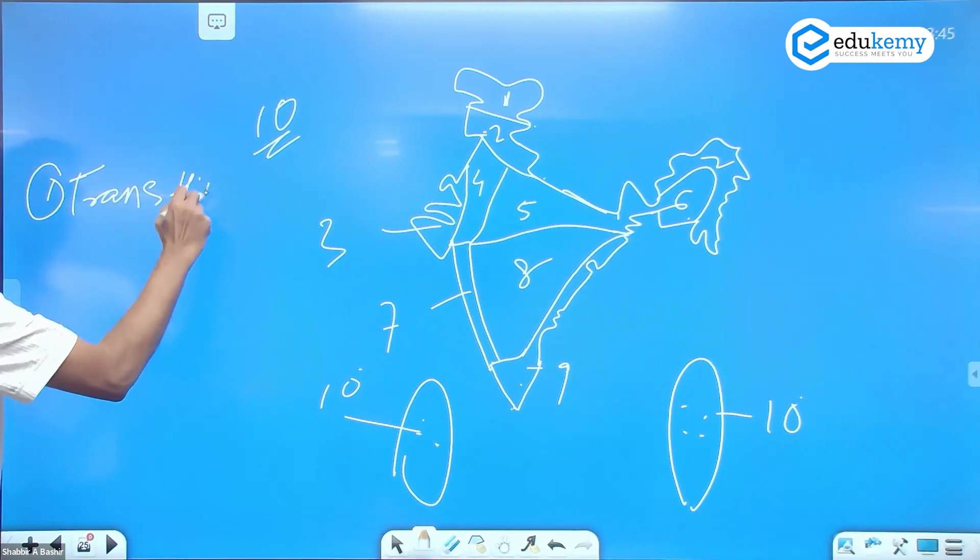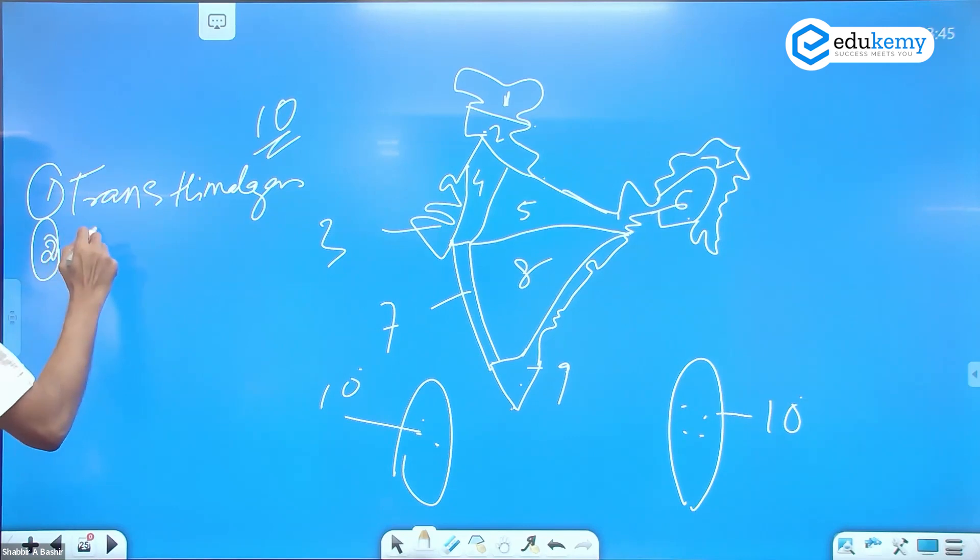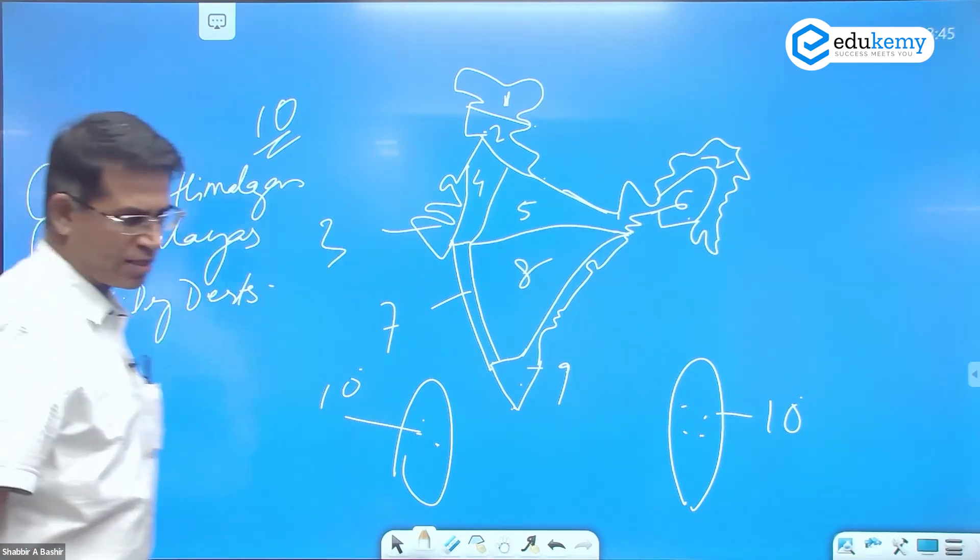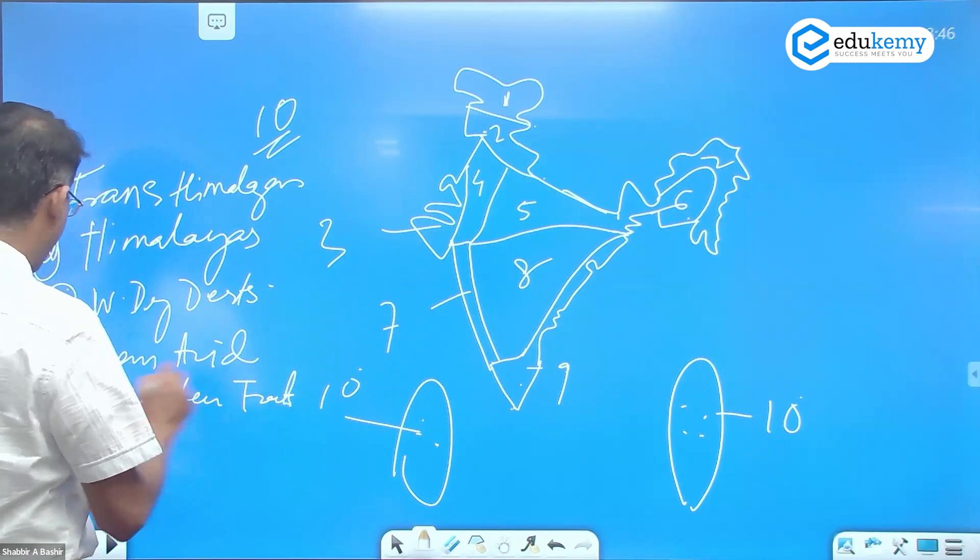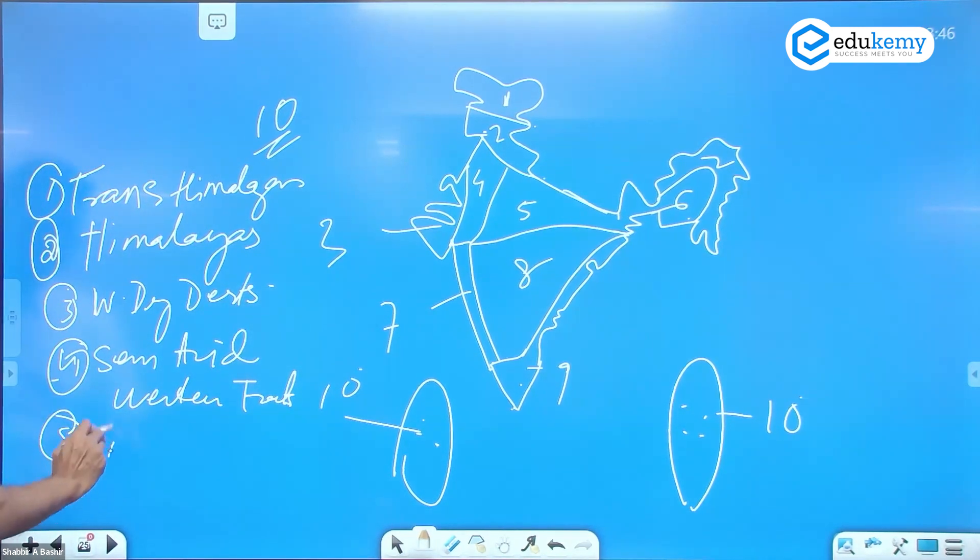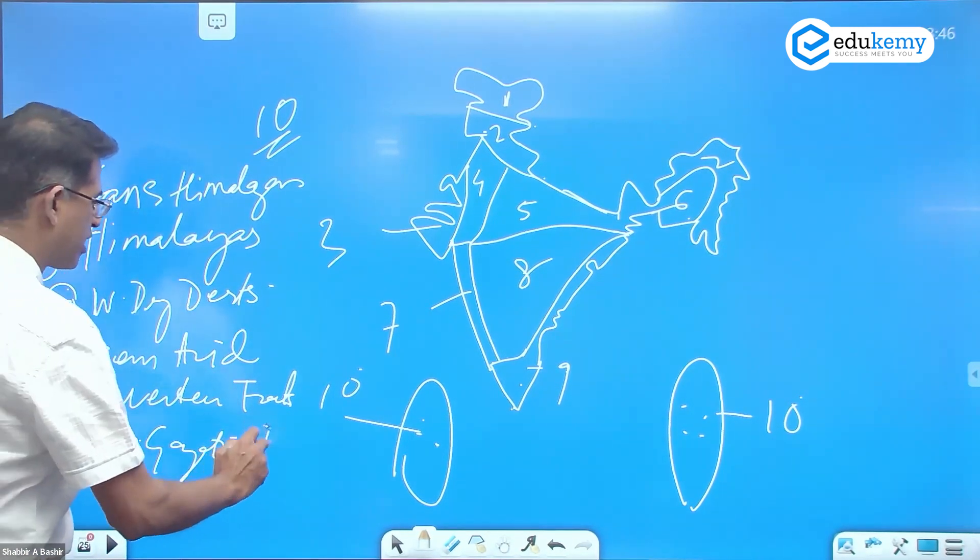One is Trans-Himalayas, two is Himalayas, three is Western dry deserts, four is semi-arid western tracts, five is northern Gangetic plains.